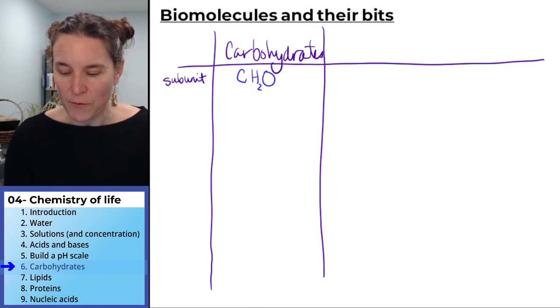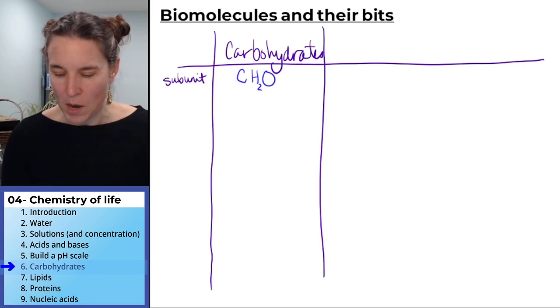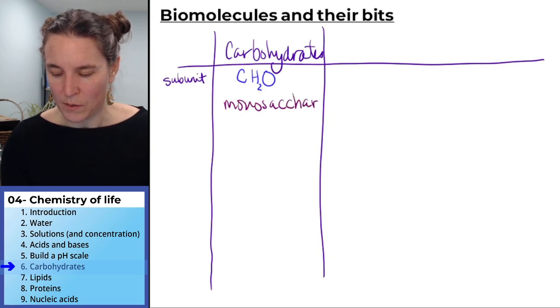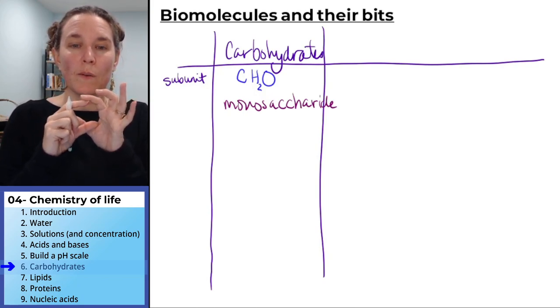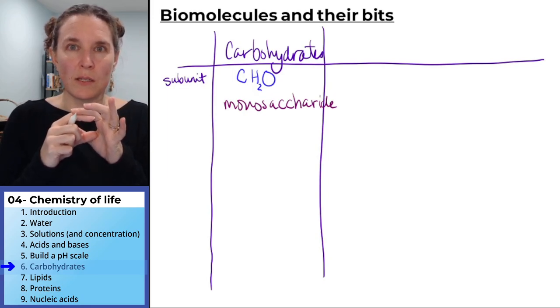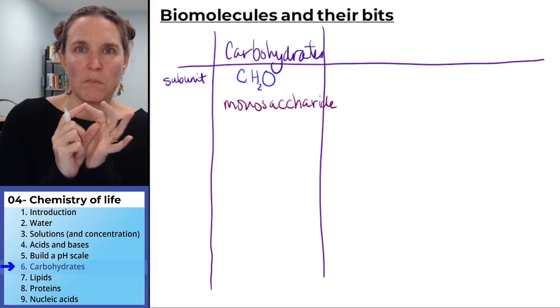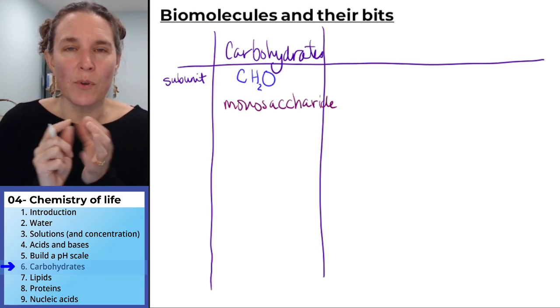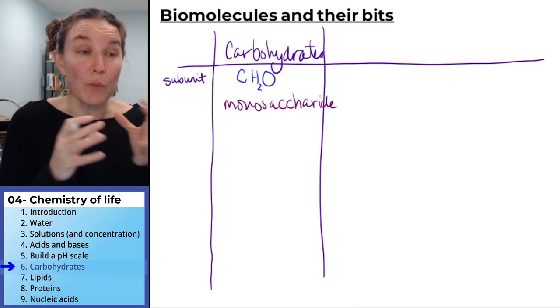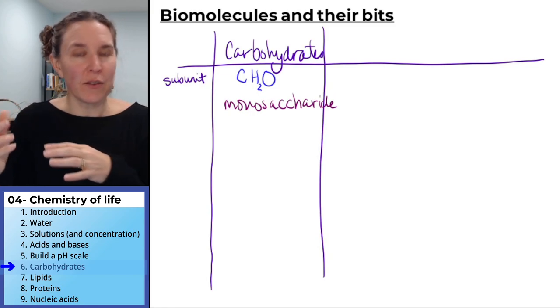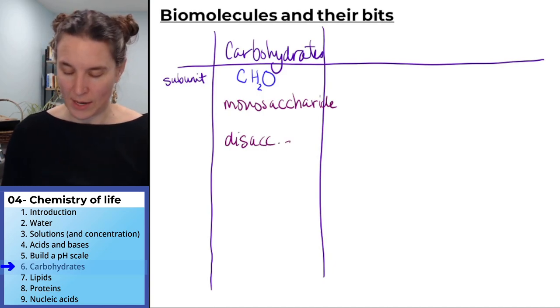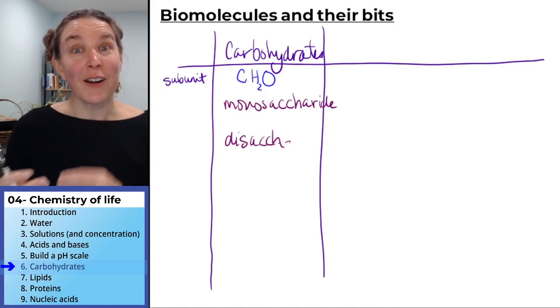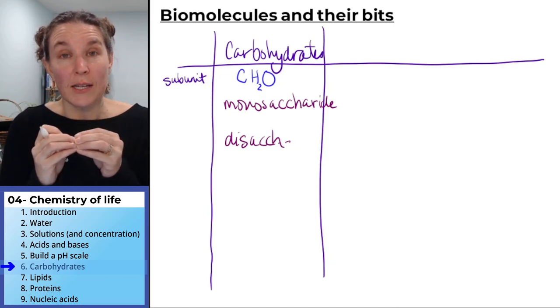They also can be found as monosaccharides, which are single subunit, single unit carbohydrates. I'm just going to give you an example. Glucose is a monosaccharide. You can put them together to make other stuff like disaccharides. Disaccharides means we take two of those monosaccharides and stick them together.